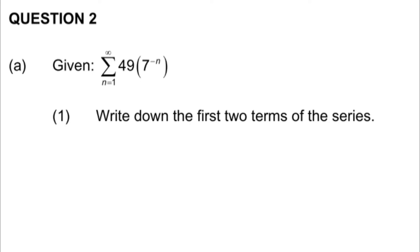The equation of the sigma notation is 49 open bracket 7 to the power of negative n. The first value we substitute is n equals 1. Now the first question asks us to write down the first two terms of this series.